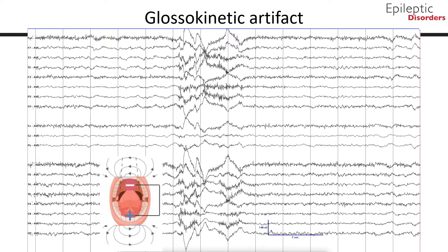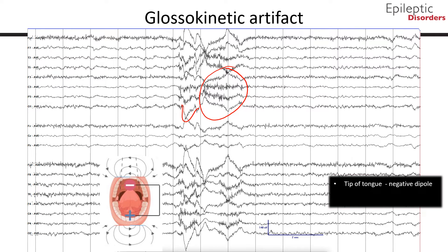Again, in average montage, note the high frequency muscle activity in conjunction with the waveforms. Validation of glossokinetic artifact can be made possible through application of tongue movement monitors with electrodes placed above and below the mouth, over the chin and cheek.